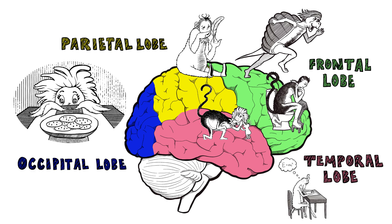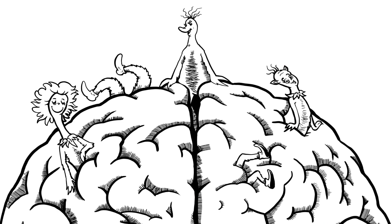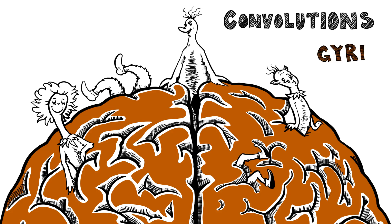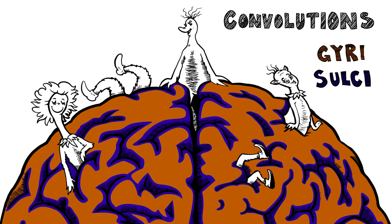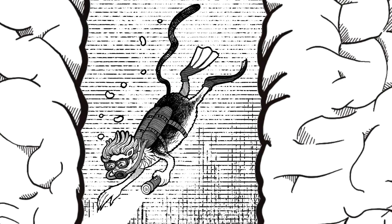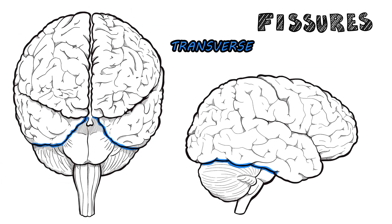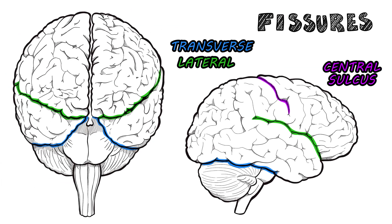The outside of the brain is all wrinkled with convolutions. Ridges called gyri and grooves called sulci give surface area contributions. Deep furrows are called fissures — note the transverse and the lateral. The central sulcus, and the largest one, the longitudinal.